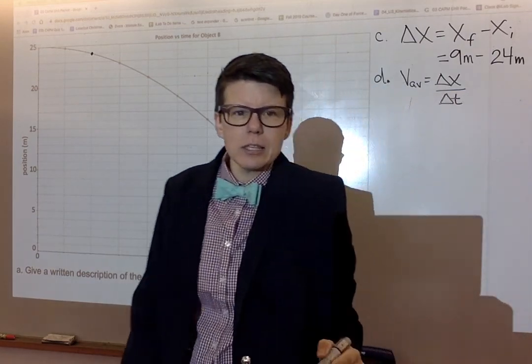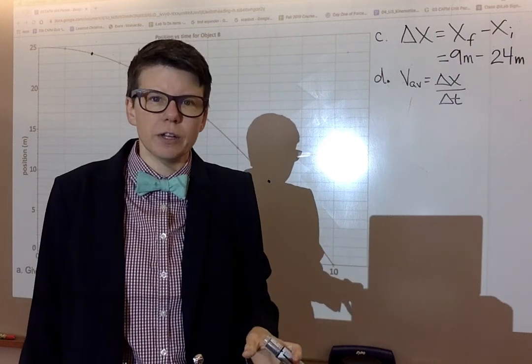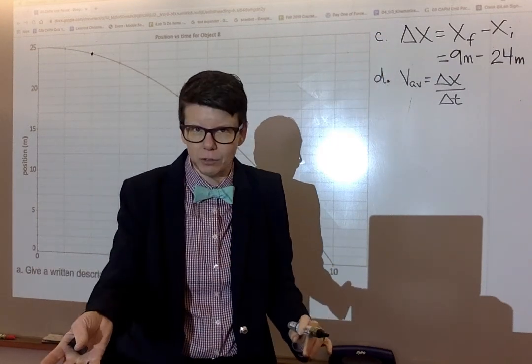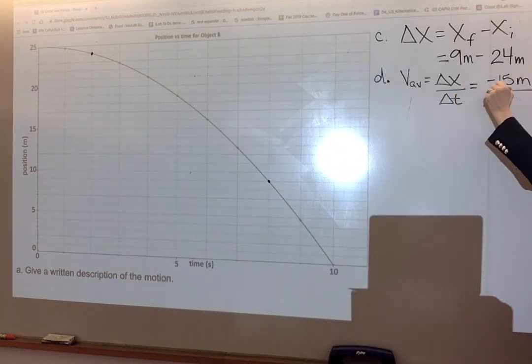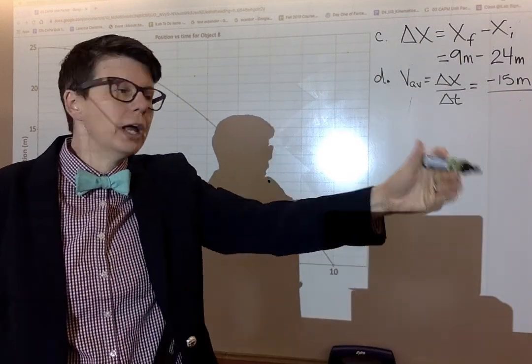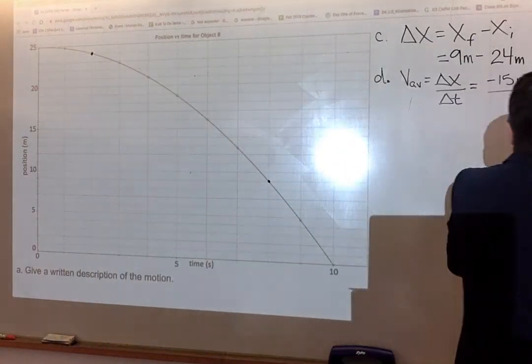Now when written down like that immediately underneath part C, it becomes really obvious why I had you find the displacement. So the answer that we got up there, it turns out it's negative 15 meters, divided by the time interval between two and eight seconds. Two to eight seconds, that is a positive six seconds.